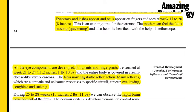From week 21 to 24, the fetus grows to about 11.2 inches and now weighs 1 pound and 10 ounces. All eye components are completely developed, footprints and fingerprints are formed, and startled reflexes develop — automatic reflex responses such as swallowing, coughing, and sucking.